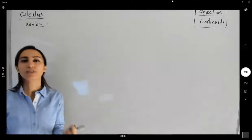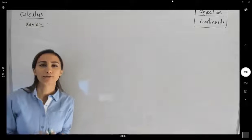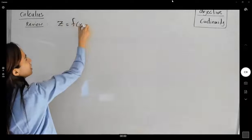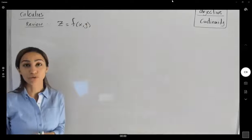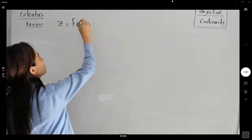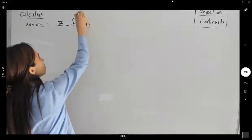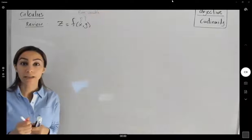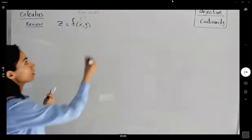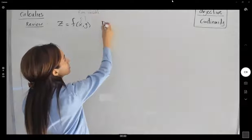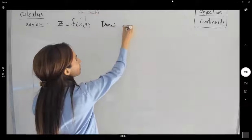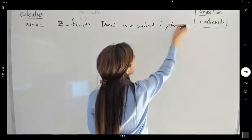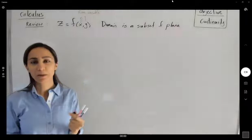We started by introducing functions with more than one free variable: z equals f of x and y. In this case, you have two free variables, x and y. These are free variables. We also learned about the domain and range of the function — the domain of a function in two variables is a subset of the xy-plane, the Cartesian plane.